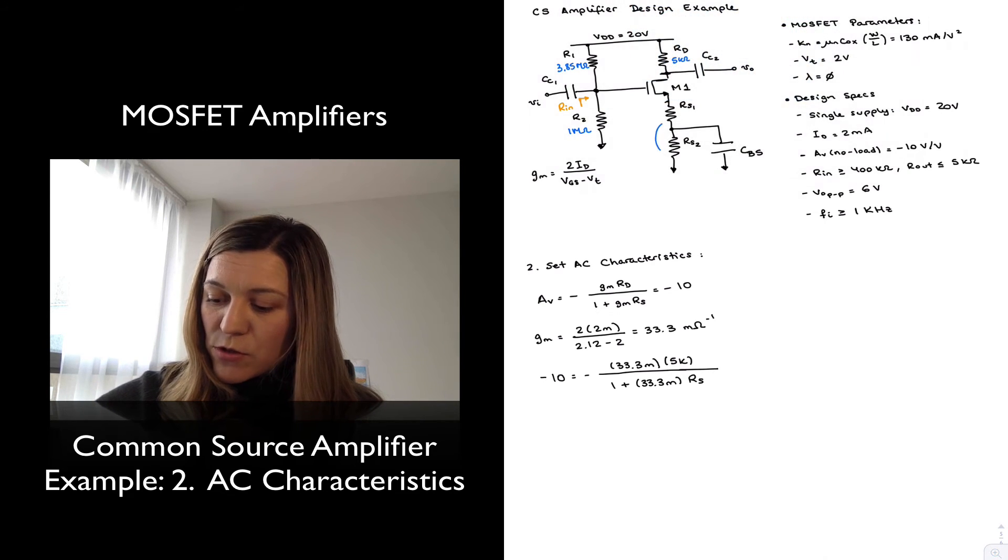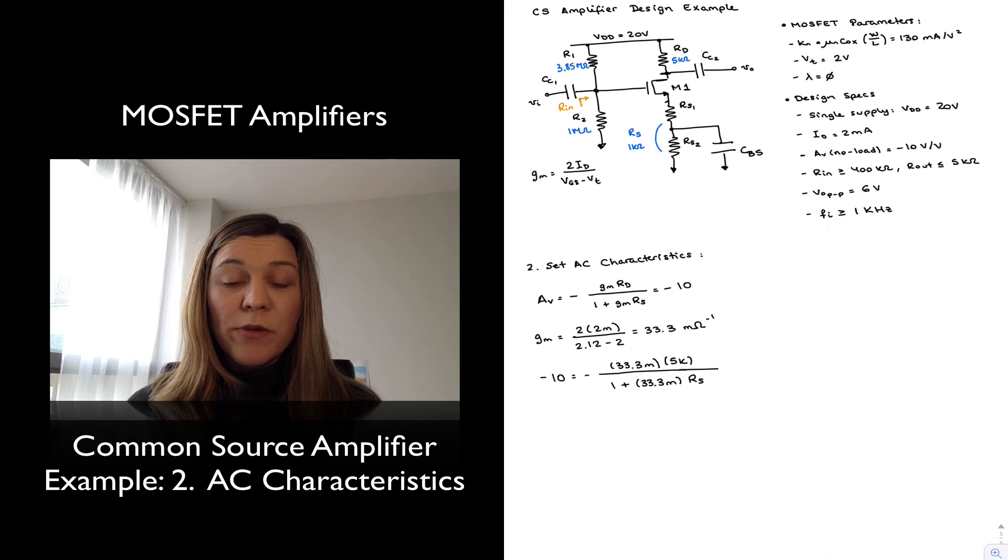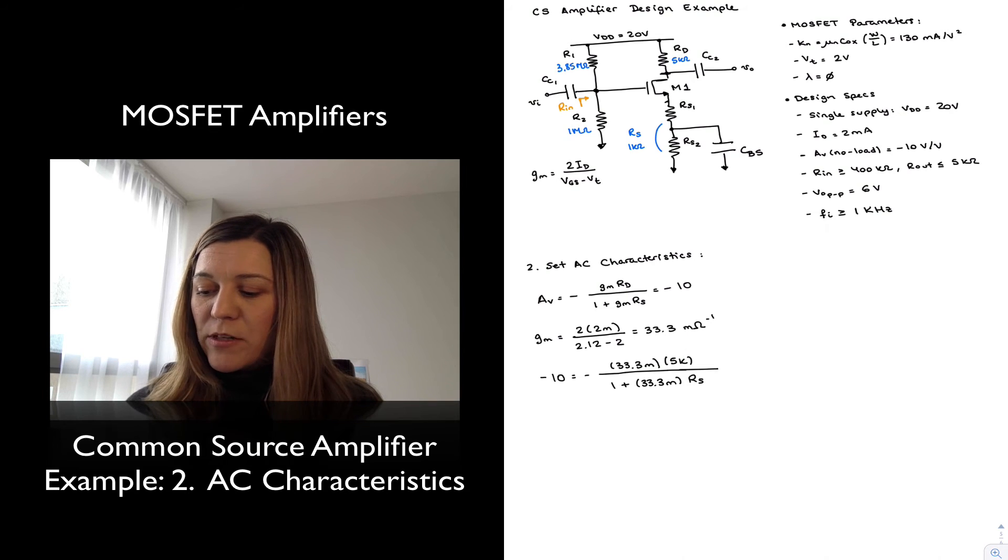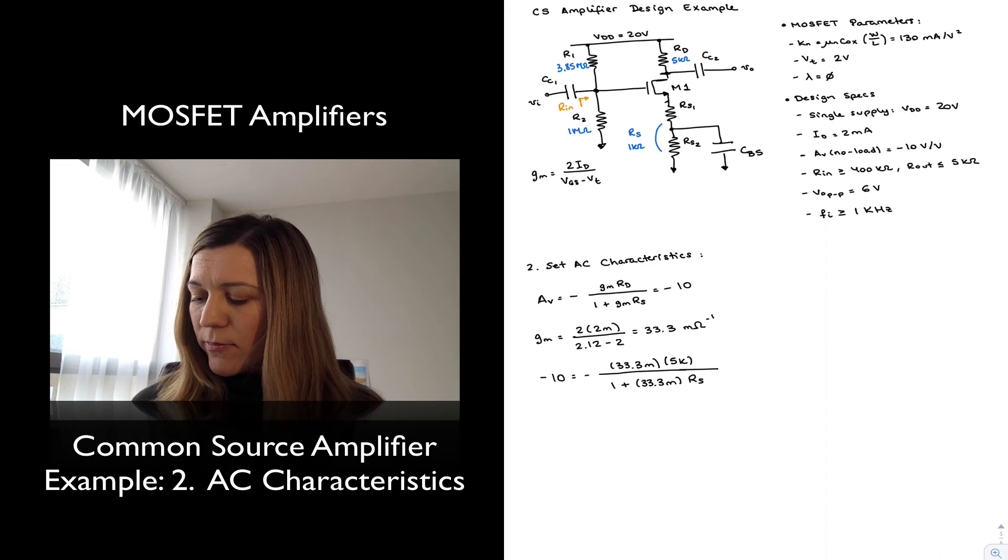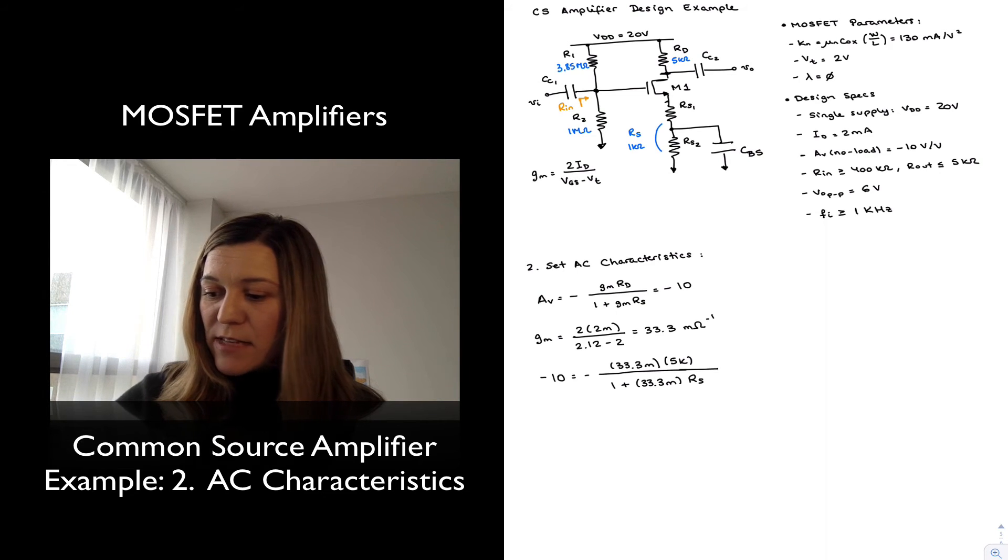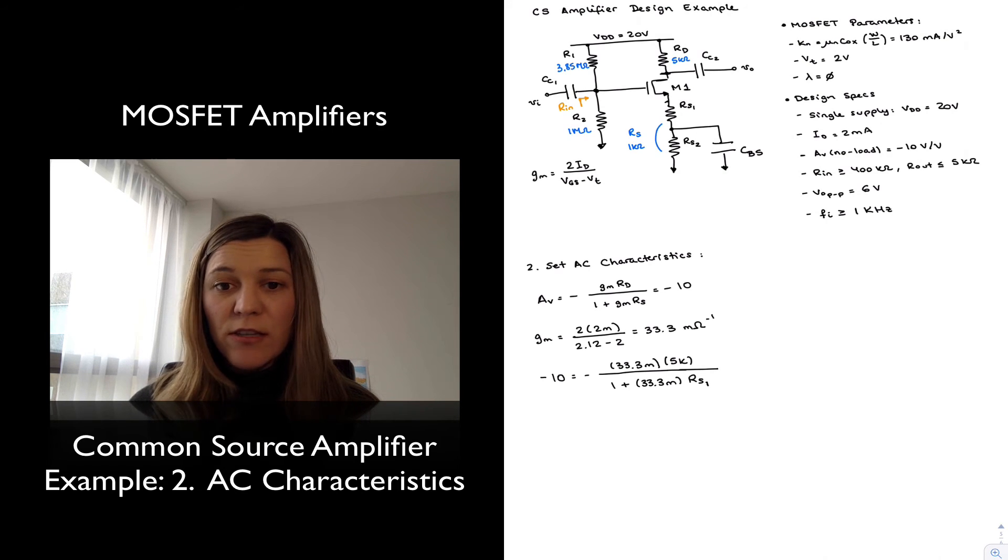But for AC purposes, for small signal AC purposes, RS2 will be bypassed by capacitor CBS, because CBS for AC purposes will become a short to ground. And a short in parallel with RS2 is just going to be an equivalent resistance of a short. And so in essence, what I have is that my gain is being determined not by RS, but by RS1. So with that, I can calculate the right value of RS1 that will give me a gain of negative 10.